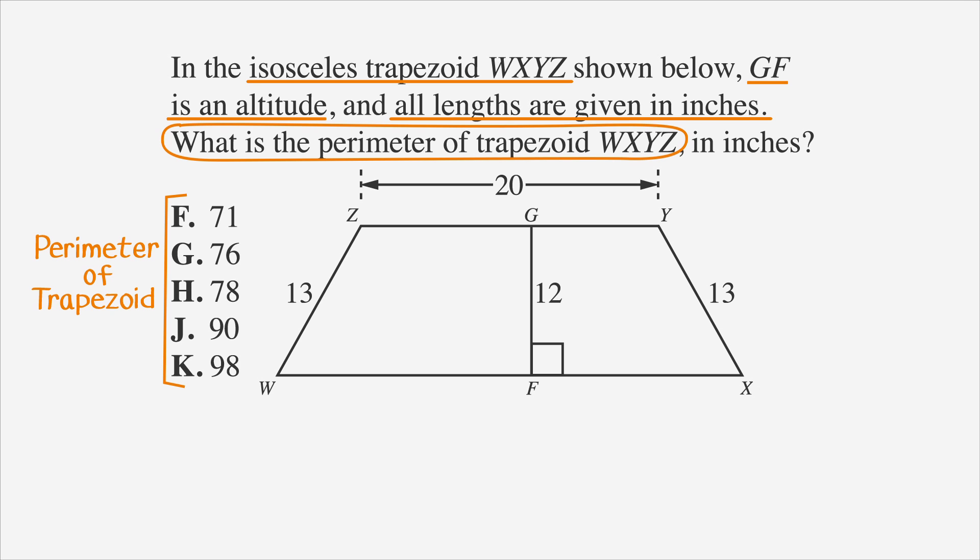The test makers gave us a picture, but if we move the altitude so that we have a rectangle and two right triangles, we can find our missing information more easily. We know that the top base is 20 and that the bottom base is 20 plus 2X. We just need to figure out what X is. We know that X is the same on both sides because this is an isosceles trapezoid.